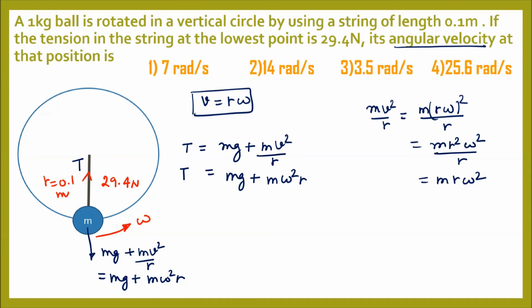Now substituting values: tension T = 29.4 N, mass m = 1 kg, g = 9.8 m/s², radius r = 0.1 m. So 29.4 = 1 × 9.8 + 1 × ω² × 0.1.